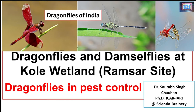Dragonflies and damselflies both belong to the order Odonata. The dragonflies belong to the suborder Anisoptera, and damselflies belong to the suborder Zygoptera. They belong to the same order Odonata, but their suborders are different.